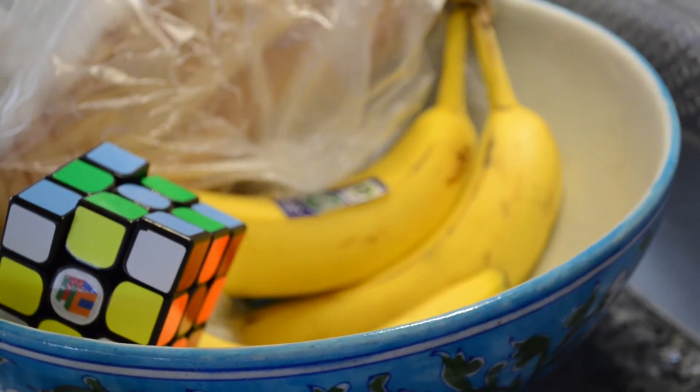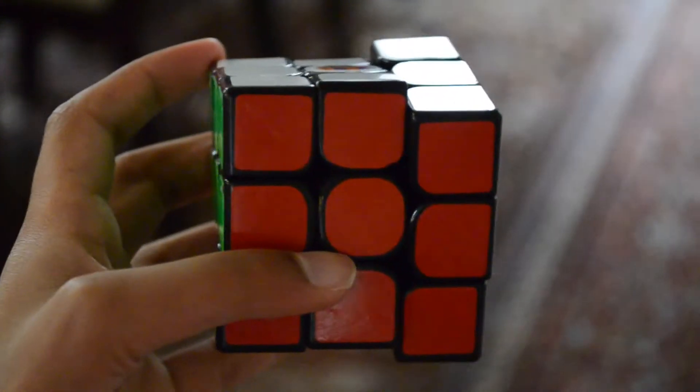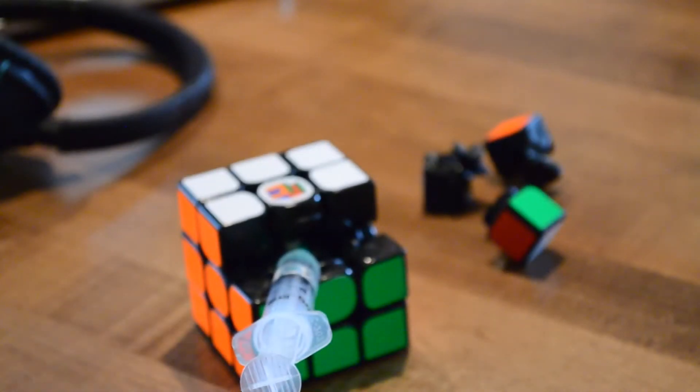This cube has a really nice scratchy smooth feel, similar to the Aolong version 1. It's very enjoyable and my favorite aspect of the cube. However, this cube can be uncontrollable to many, but for me it's just barely controllable. It's been lubed with weight 5 on the pieces and core multiple times.